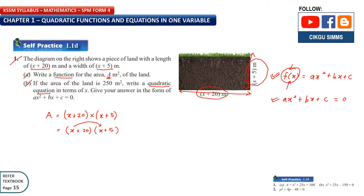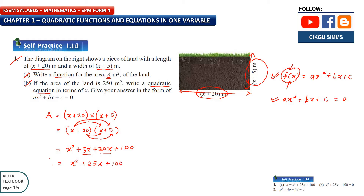Expanding: x times x, then x times 5, then 20 times x, then 20 times 5. That gives x² + 5x + 20x + 100. The two x terms are both x terms, so you add them: 5x plus 20x gives 25x plus 100. This is your answer for part A.